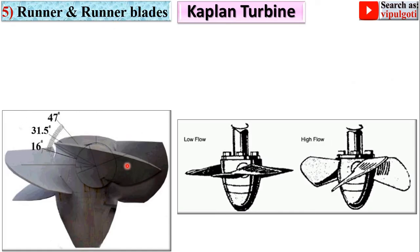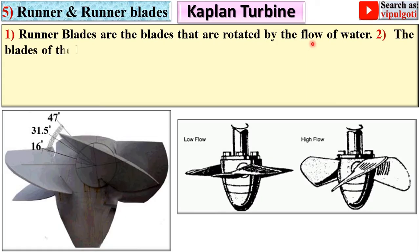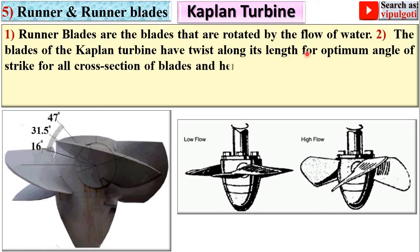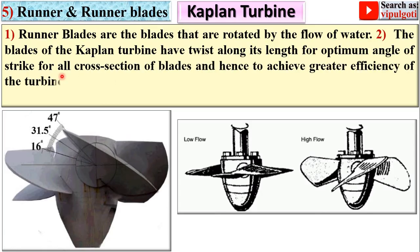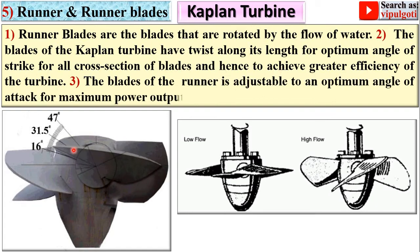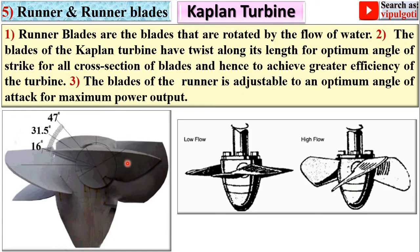Next: runner and runner blades. The runner blades are rotated by the flow of water. The blades of the Kaplan turbine have a twist along their length for an optimum angle of strike for all cross-sections of the blades, achieving greater efficiency. One position is for low flow and another for high flow. The blades of the runner are adjustable to an optimum angle of attack for maximum power output.